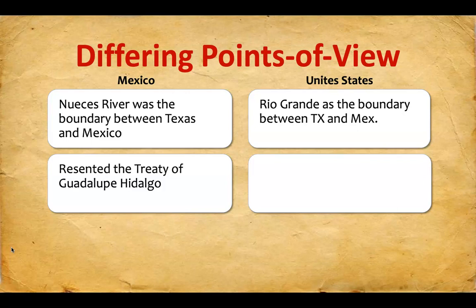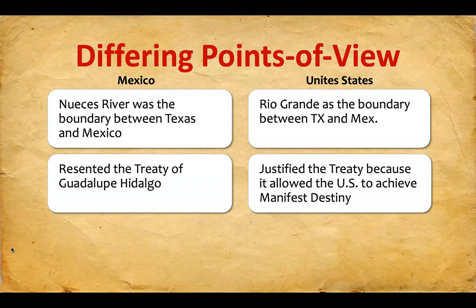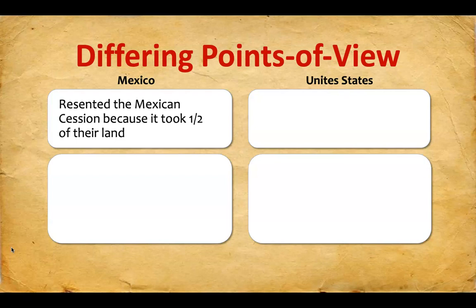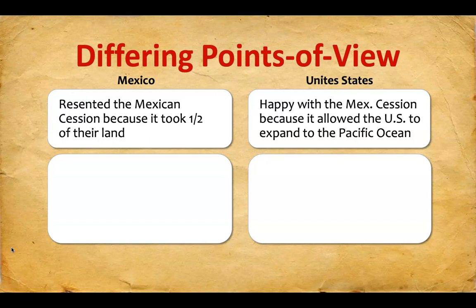The Mexican point of view on the Treaty of Guadalupe Hidalgo was that they resented it — their land had been taken away and they were told to become U.S. citizens or move to Mexico. The U.S. liked the Treaty of Guadalupe Hidalgo and justified it because it allowed the United States to achieve Manifest Destiny — that belief that they had the right and privilege to expand to the Pacific Ocean. Mexico resented the Mexican Cession because it took half of their land. The U.S. was happy with the Mexican Cession because it allowed the U.S. to expand to the Pacific Ocean — once again, Manifest Destiny.